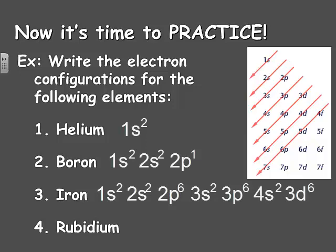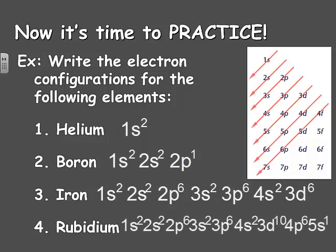Rubidium has 37 electrons, so its configuration would be: 1s2, 2s2, 2p6, 3s2, 3p6, 4s2, 3d10, 4p6, and with only 1 electron left, it ends with 5s1.